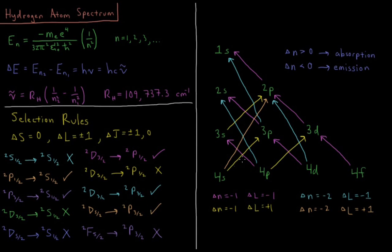The yellow arrows are delta N equals minus one, delta L equals plus one. And the orange arrow is delta N equals minus two, delta L equals plus one. Based off the selection rules of N and L, all of these kinds of transitions are allowed.